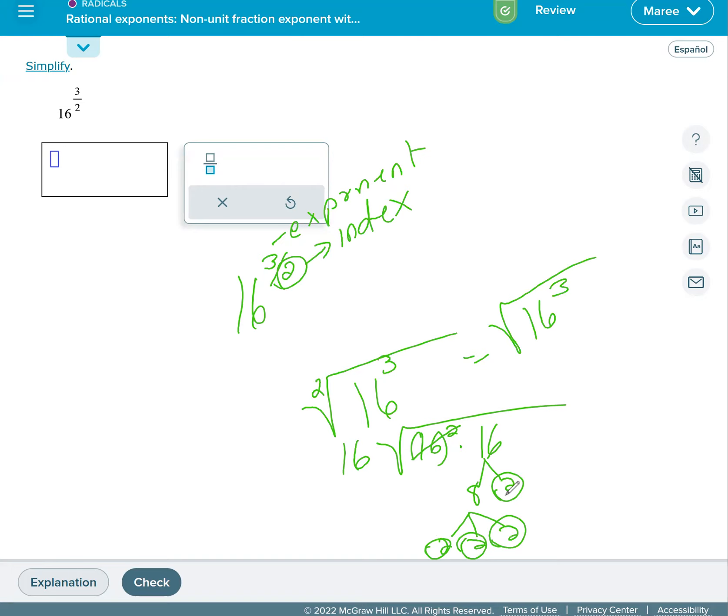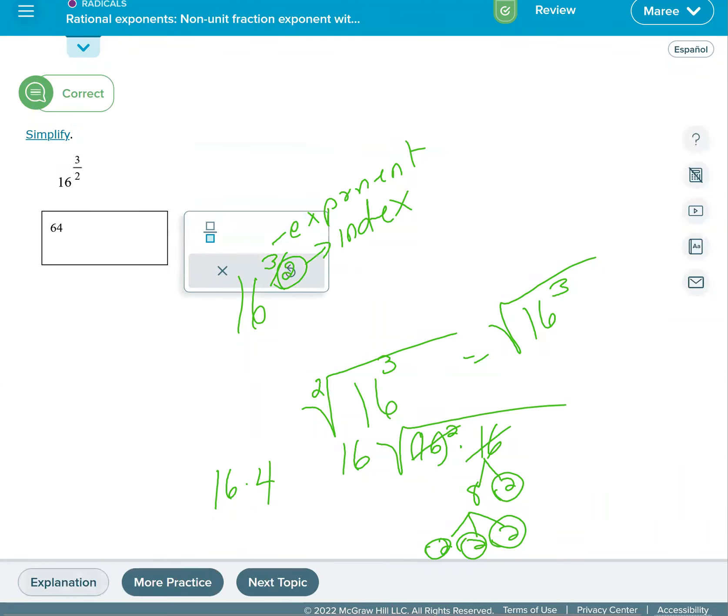We know the square root of 16 is 4, so we have 16 times 4 for a final answer. There's nothing left in the square root box, so this is going to be 64. 16 times 4 is 64. Okay, let's try another one.